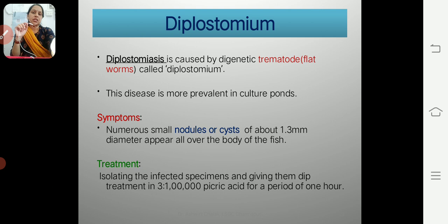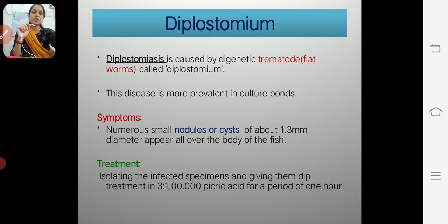The next worm to discuss is Diplostomium. The disease caused by its infection is called diplostomiasis. It is caused by a digenetic trematode and requires two hosts to complete its life cycle. Diplostomium is primarily found in culture ponds and is dangerous to cultured fishes. It develops nodules or cysts on the fish body, about 1.3 mm in diameter.